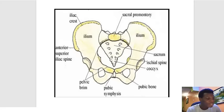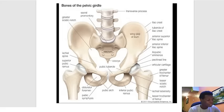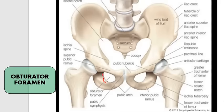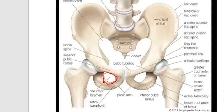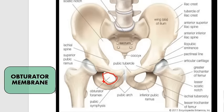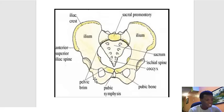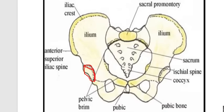Another important structure is the obturator foramen — that hole is called the obturator foramen, and one structure associated with it is the obturator membrane, which closes it in a real human. Do not confuse the obturator foramen with the acetabulum. The acetabulum is a depression in the hip bone where the head of the femur inserts, whereas the obturator foramen is a hole that structures pass through.